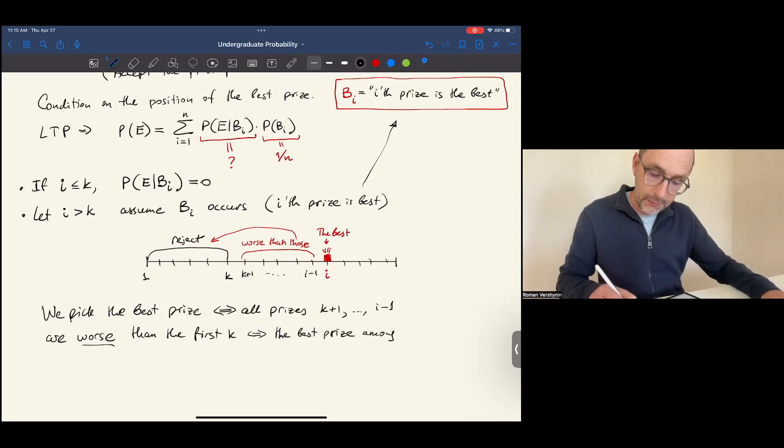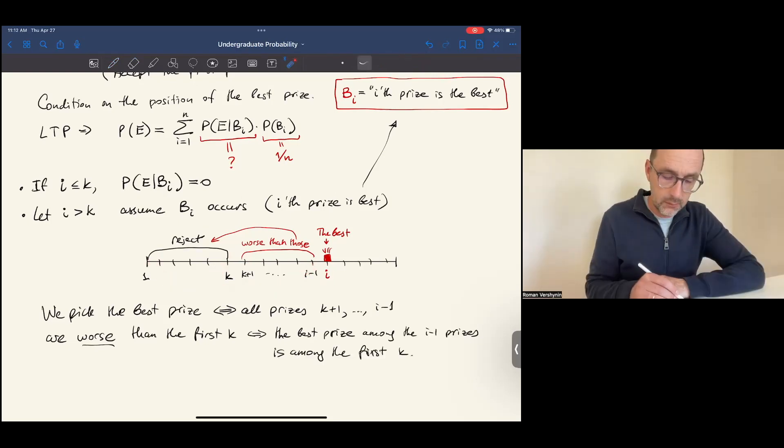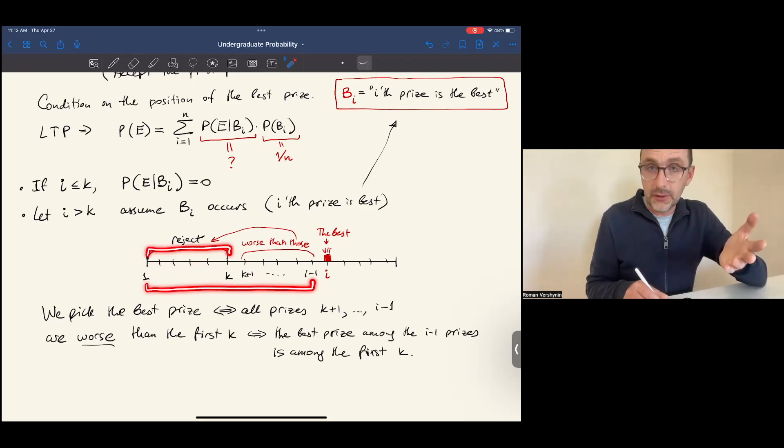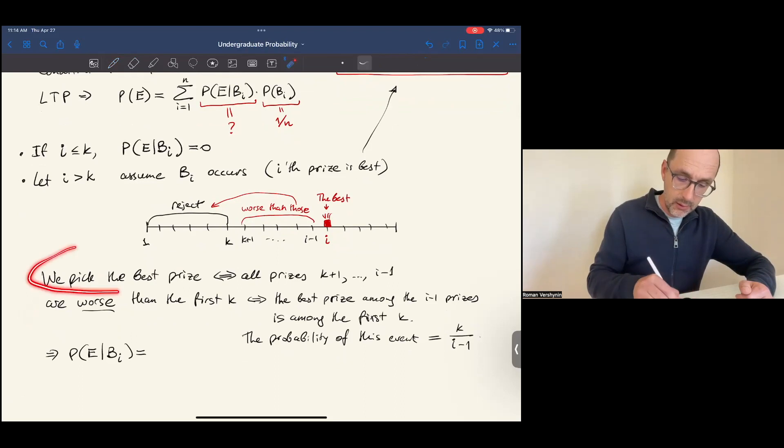And that means that within this group, the best prize is here. So the best prize among the first i minus 1 prizes is here. And what is the probability of this event? Any of these i minus 1 prizes are equally likely. So the probability that this will be the best among i minus 1 is 1 divided by i minus 1, and the probability that this is the best among i minus 1 is also 1 divided by i minus 1, and so on. There are k of them. So the probability that we pick the best prize if the best prize is at location i equals k divided by i minus 1.